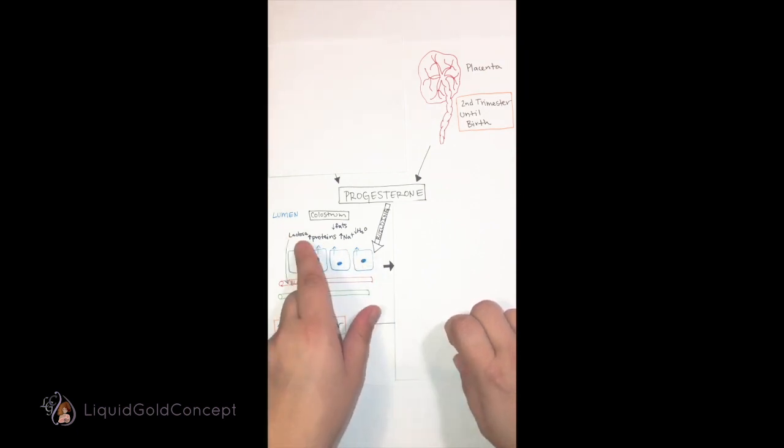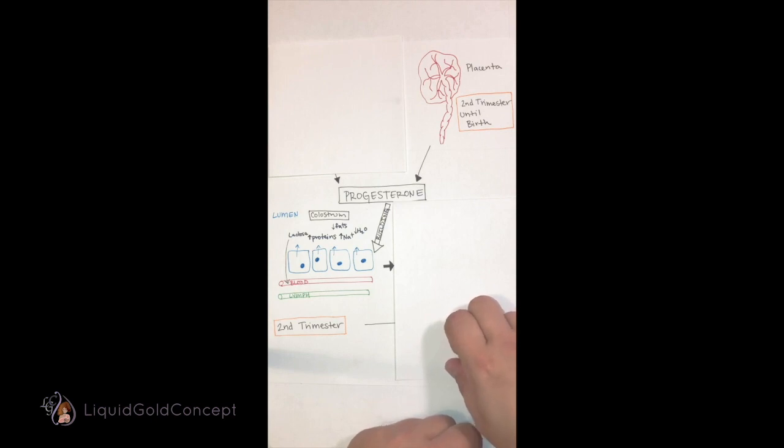We can detect lactose, the main sugar in milk, in the blood and urine as early as the second trimester. The mammary glands are the only tissue in the human body capable of synthesizing lactose, so the lactose must come from the mammary tissue.